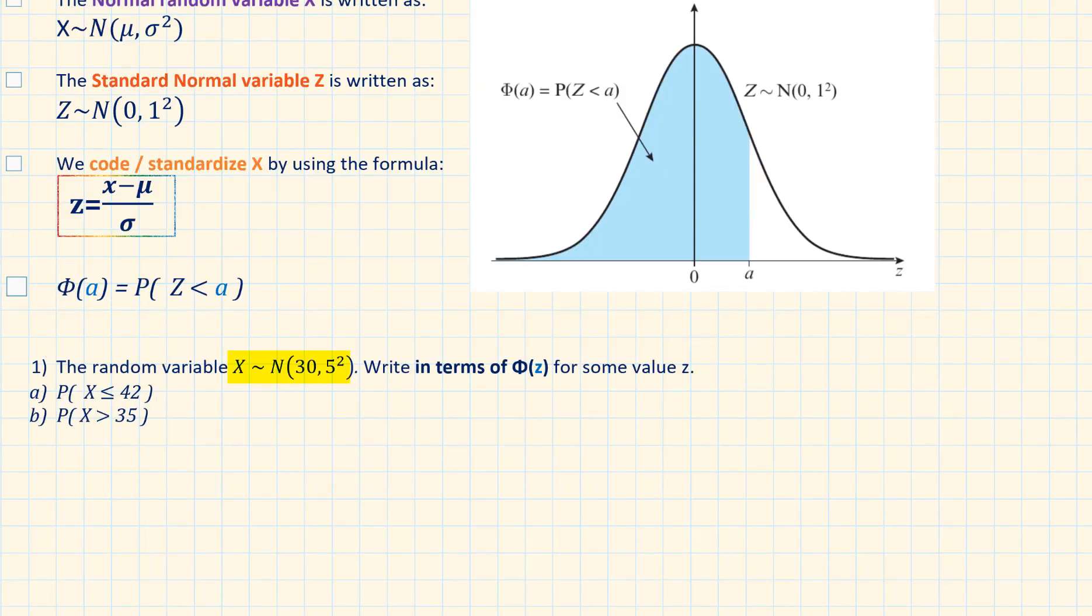Example 1: The random variable X is normally distributed with a mean of 30 and variance 5². Write in terms of Φ(z) for some value of z, the probability of X being less than or equal to 42. First we need to standardize 42 by using the formula z = (x - μ)/σ.